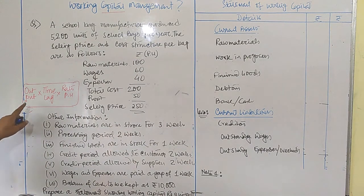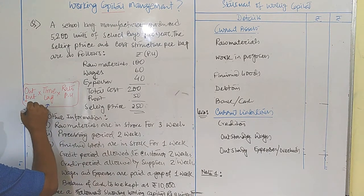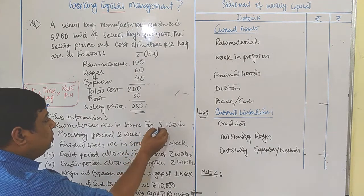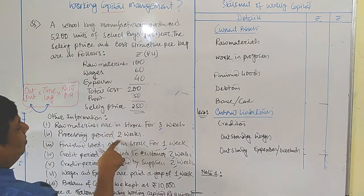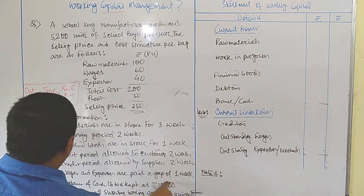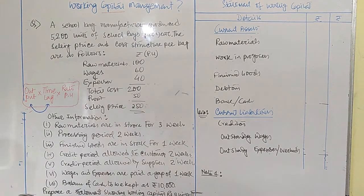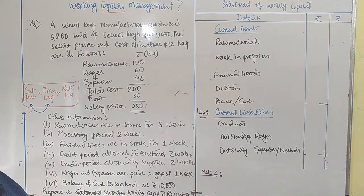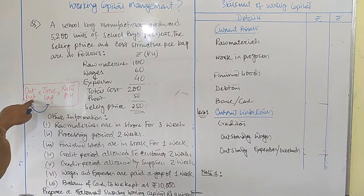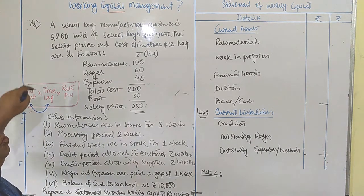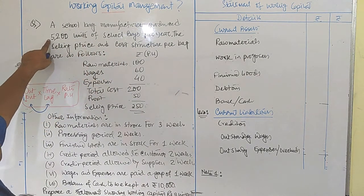First of all, you have to settle the output. Output is directly related to whatever time lags are provided in the given question. If you look at the time lags — three weeks, two weeks, one week, two weeks, two weeks, one week — they are all available on a weekly basis. So in this question, all information related to time lags is on a weekly basis, which makes it easier for us to calculate working capital on a weekly basis too. The first job is to establish the output, and since all time lags are weekly, we convert annual output into weekly output.